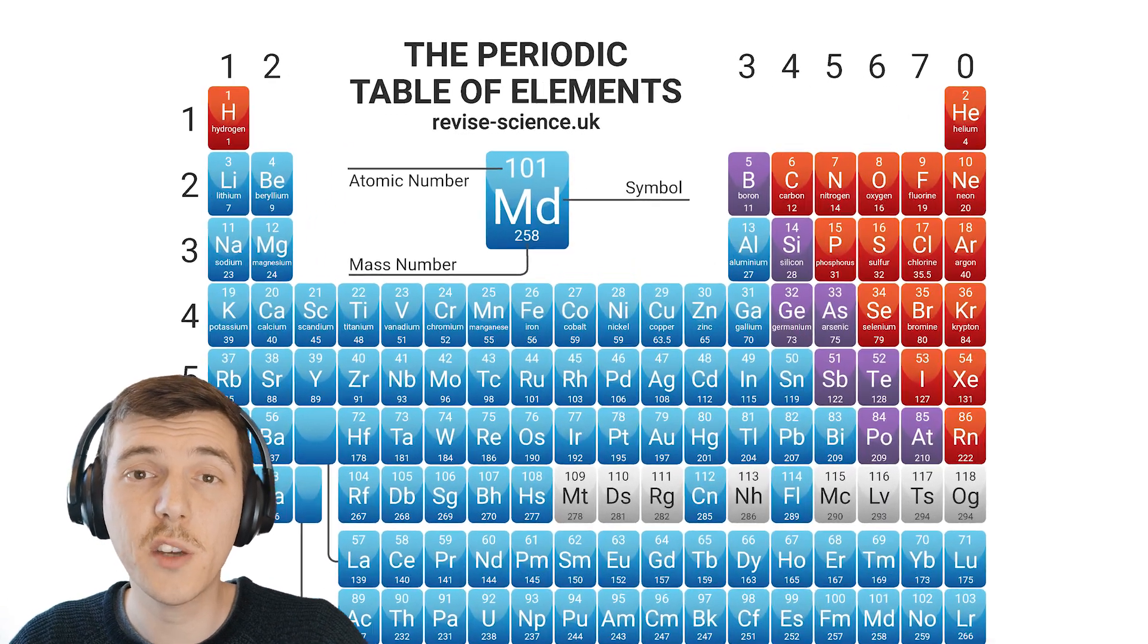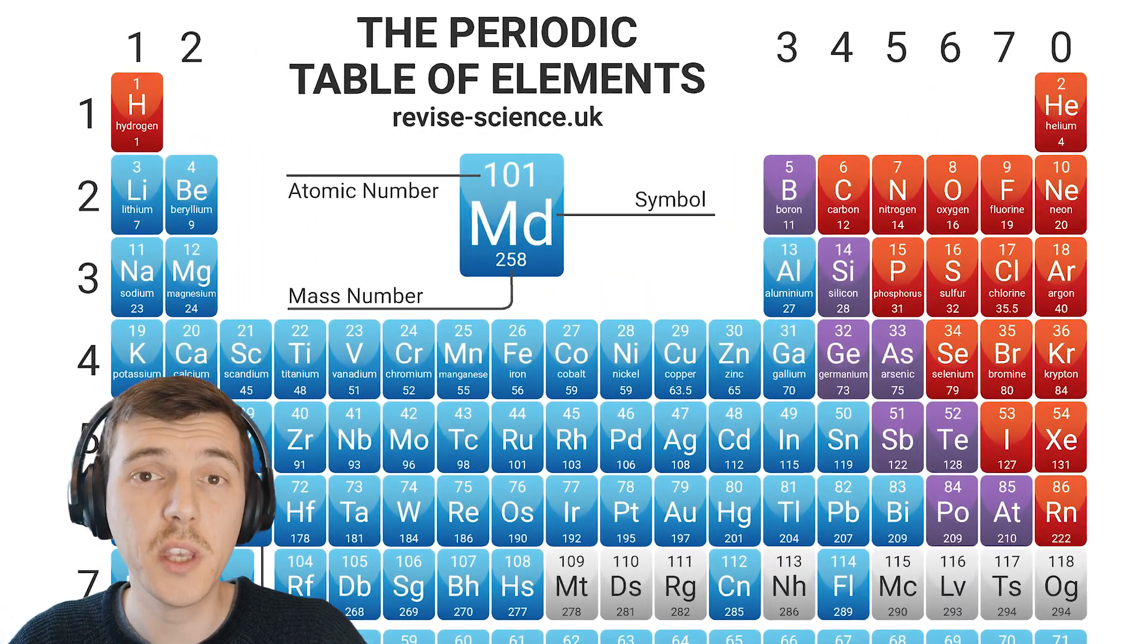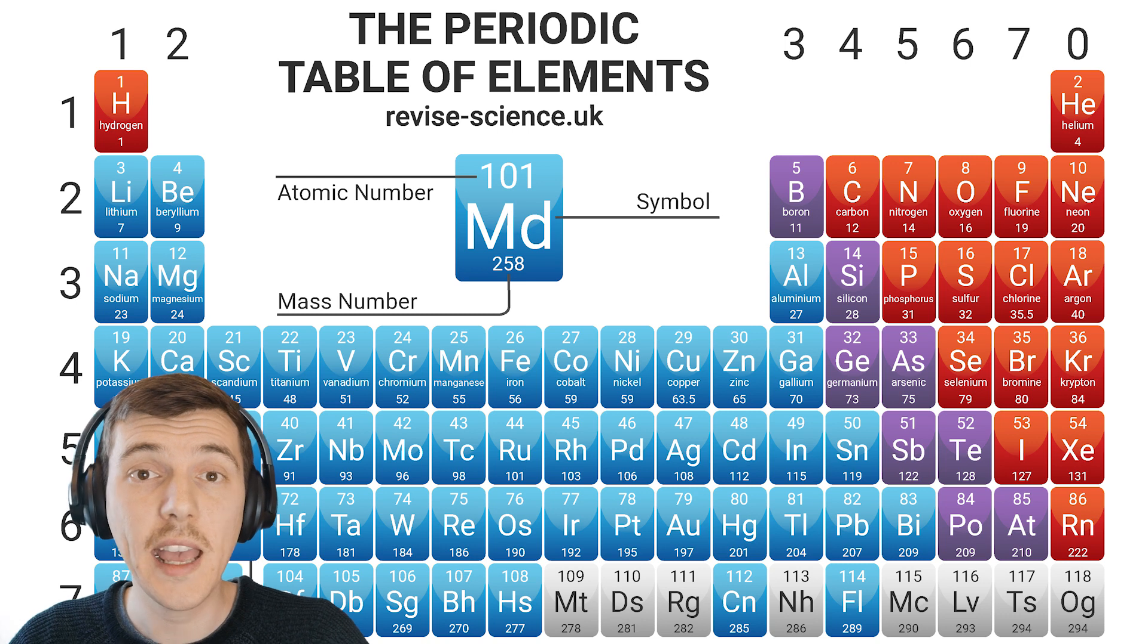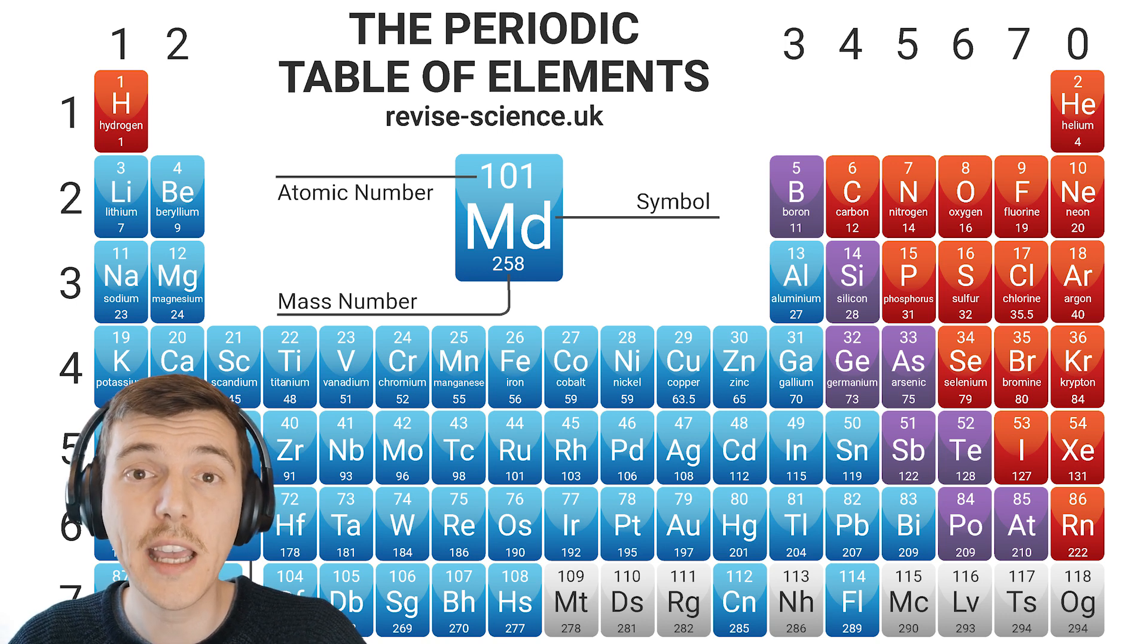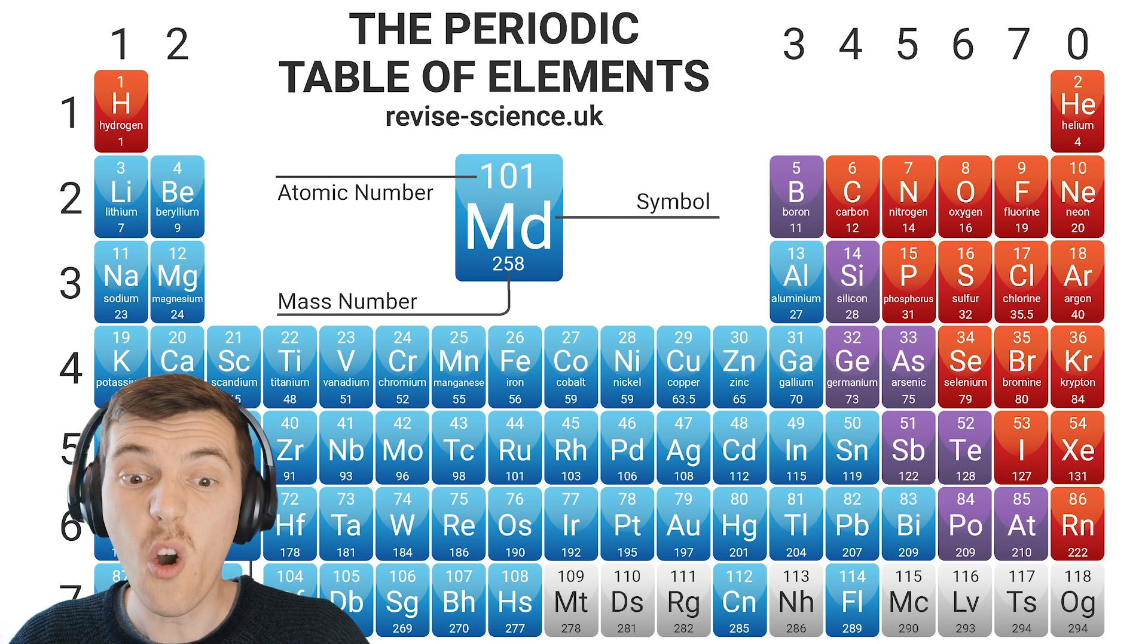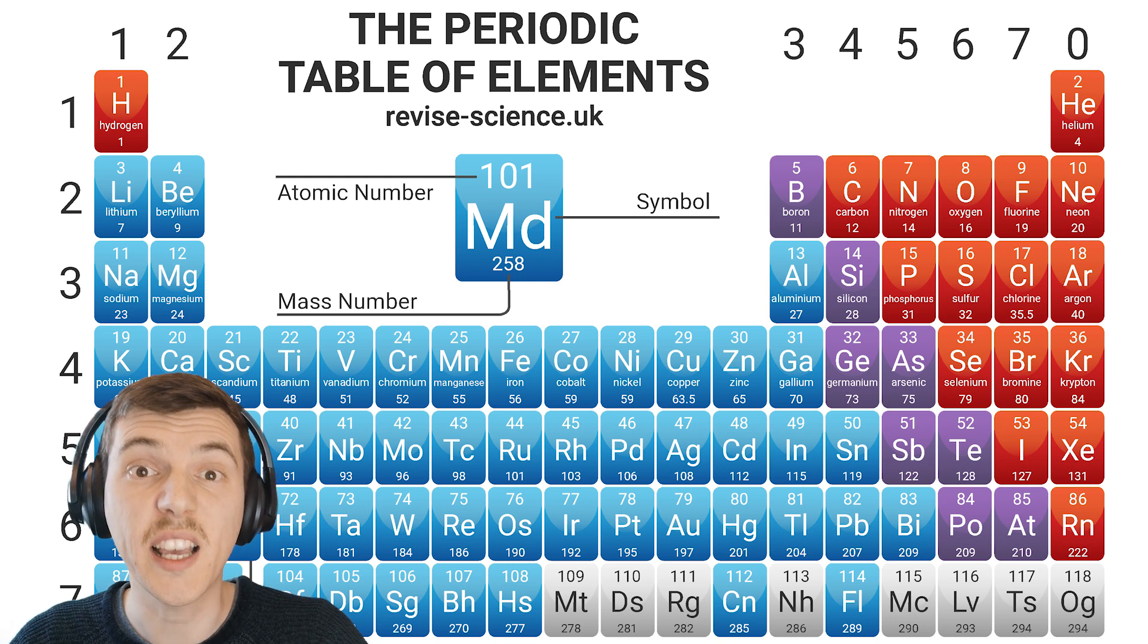We can find a list of every single element that we know about on something called the periodic table. It contains lots of handy pieces of information about each element, and actually orders them together based on similar chemical properties.